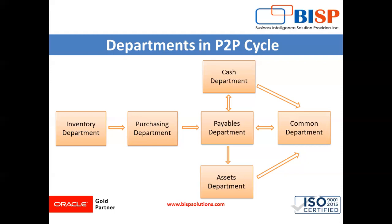In the next step, we create the purchase requisition, also called PR. After finalizing the needs for goods and services, a purchase requisition is created. The requester fills out the purchase requisition form and submits it, ensuring that all the necessary administrative requirements are met.